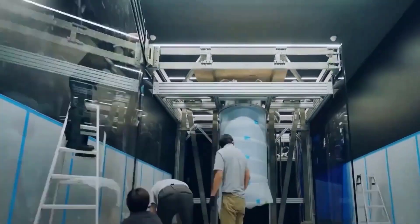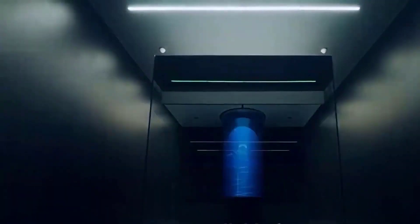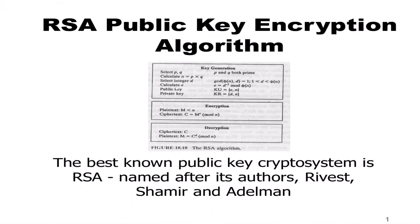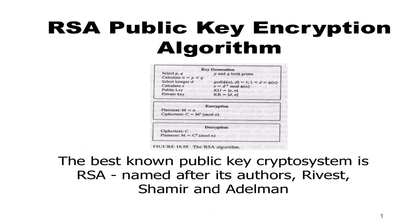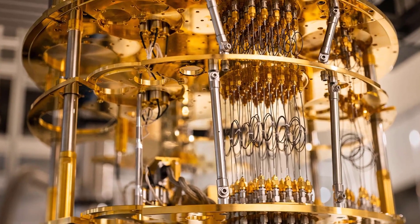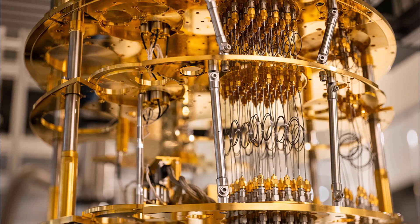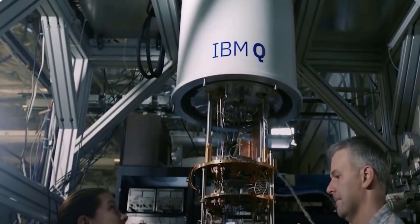The internet relies on encryption to protect sensitive information and ensure secure communications. One widely used encryption method is RSA, which relies on the difficulty of factoring large prime numbers. While classical computers struggle to crack RSA encryption, quantum computers could shatter it using Shaw's algorithm, which can factor large numbers exponentially faster than any known classical algorithm.